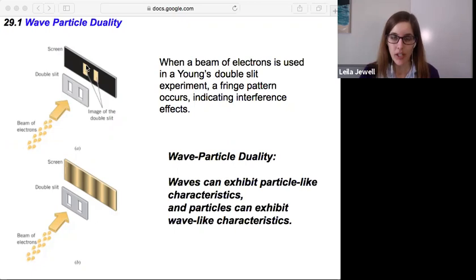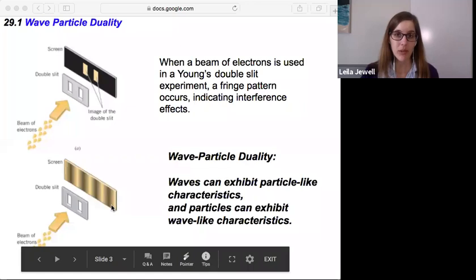The electrons would appear perhaps on either side, but instead of just having a simple shadow of the two slits, a fringe pattern occurs. There's some sort of interference effects that the screen looks like in terms of where the electrons are.